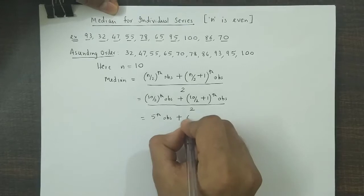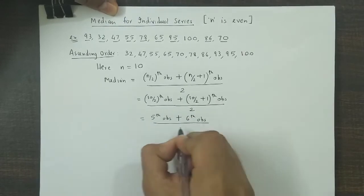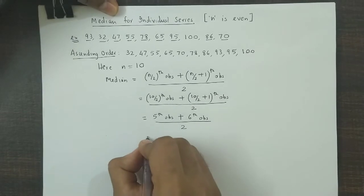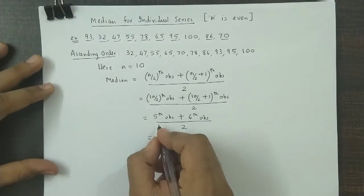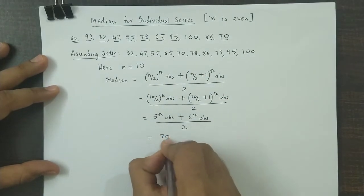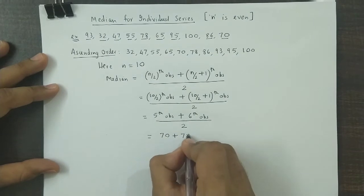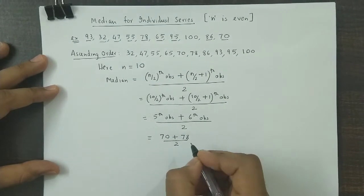Five plus five plus one, that is the sixth observation, divided by two. Now the fifth observation in the ascending order is one, two, three, four, five—so the fifth observation is 70. Sixth observation is 78, divided by two.